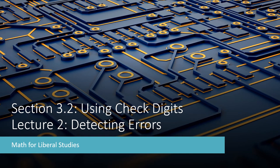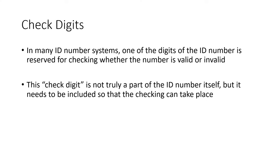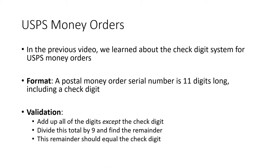This is the second video for section 3.2 on using check digits. In this lecture, I'll be talking about detecting errors. In the previous lecture, we talked about what a check digit is. What we said was that in many ID number systems, we've got an extra digit, or sometimes more than one digit, that are reserved for checking whether the number is valid or invalid. This check digit is not really part of the ID number itself, but it needs to be there so that we can do the checking for validity. Specifically, we talked about a check digit system for US Postal Service money orders.